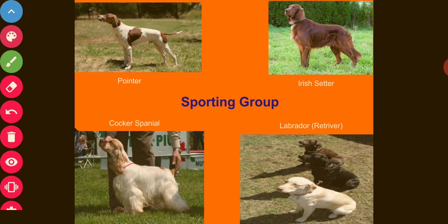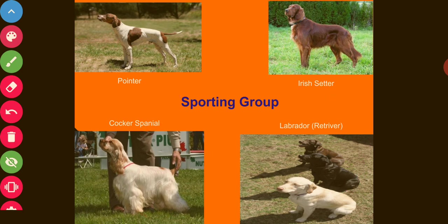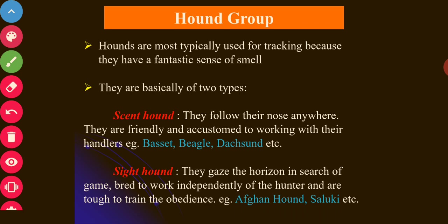Examples of the Sporting Group include the Pointer, Irish Setter (relatively common in India), Cocker Spaniel (particularly seen in southern India), and Labrador, which is common and found almost all over India.